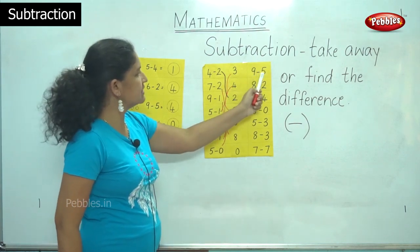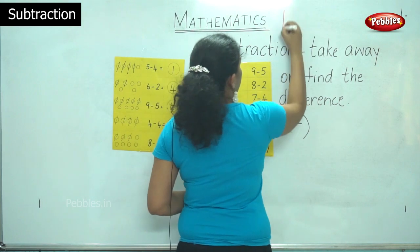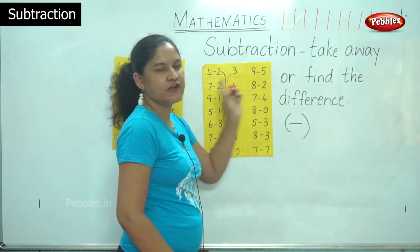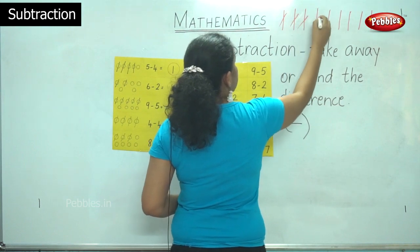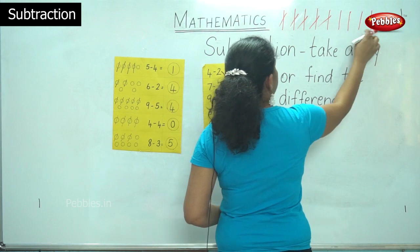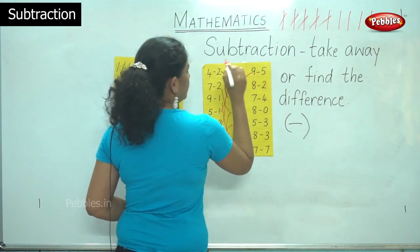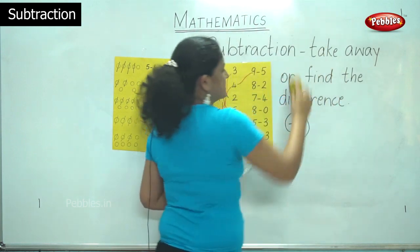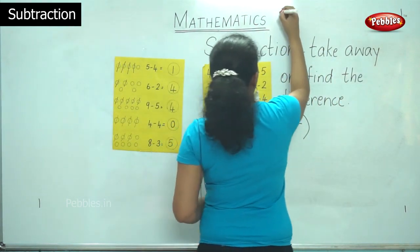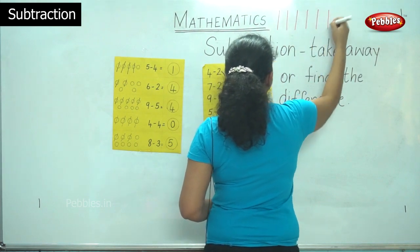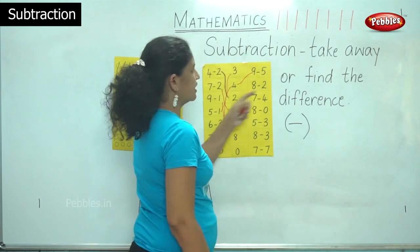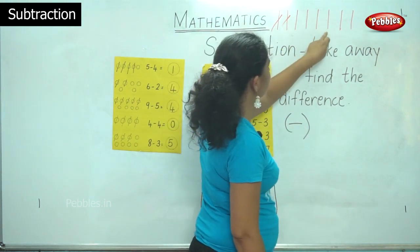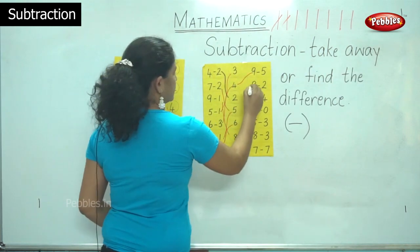Then we will move on to the next side of the chart. So I have 9 take away 5. So I have 1, 2, 3, 4, 5 — and 1, 2, 3, 4, 5. I have 9 and I am taking away 5 sticks. Then: 1, 2, 3, 4, 5, 6, 7, 8. I have 8 sticks and I have to take away 2 sticks: 1, 2. And I have to count the remaining number of sticks: 1, 2, 3, 4, 5, 6. So my answer is 6.